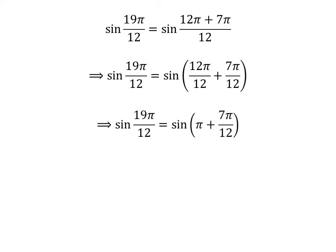Cancelling out the common factor in the numerator and the denominator in each fraction gives us sin of 19 times pi upon 12 is equal to sin of pi plus 7 times pi upon 12.